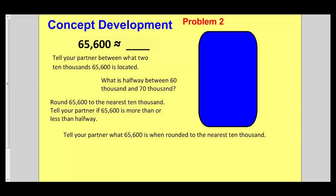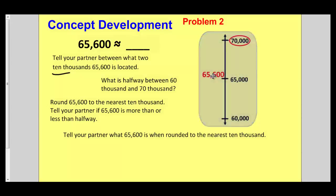Let's try another one: 65,600, and notice we're rounding to the nearest 10,000. Press play to check your work. You can see there are 6 ten-thousands, which is 60,000, and 70,000 is one more. 65,600 is closer to 70,000, so 65,600 rounds to 70,000.